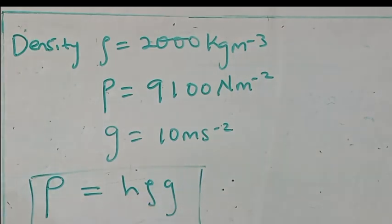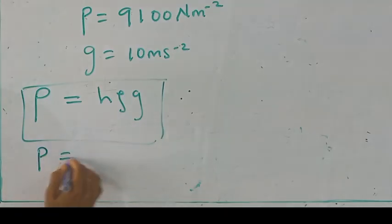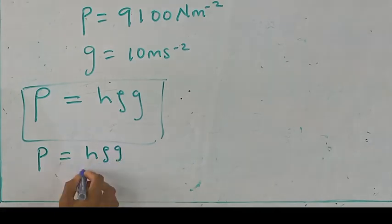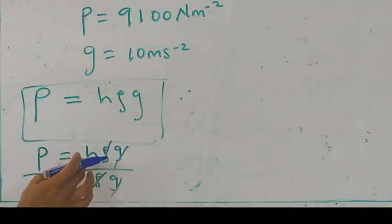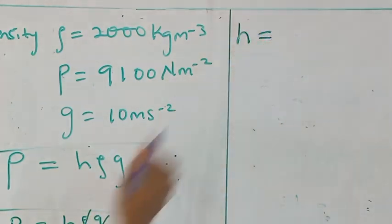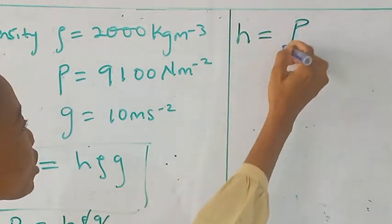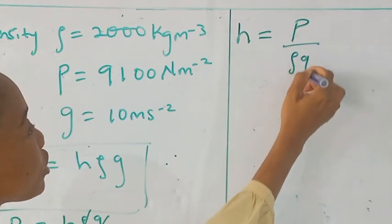So, if we make H the subject of the formula, by dividing here, we have H rho g, dividing here by rho and g, rho and g, so that H will stand out. The height that we are looking for is equal to pressure over rho g.